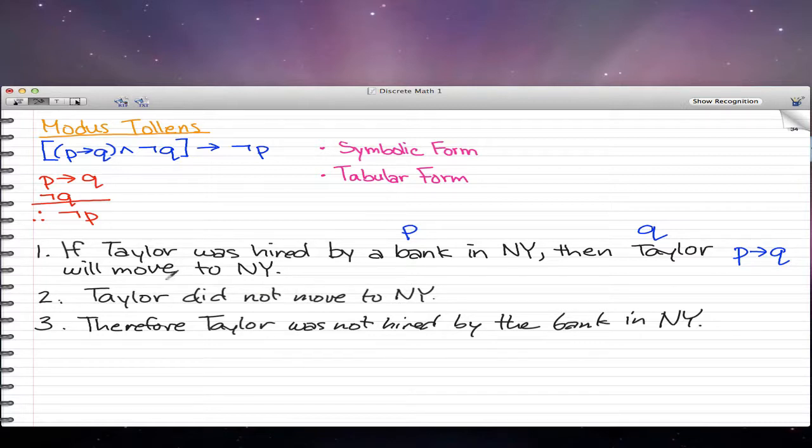The second statement would be Taylor did not move to NY, so that would be negated q because if he did move to NY, that would be q. So he did not move to NY, that's negated q. Therefore, we can know that Taylor was not hired by the bank in NY. That is negated p because if it was p, then he would have been hired by the bank, but he was not hired by the bank, so it's negated p.